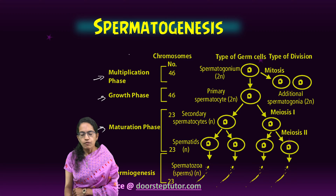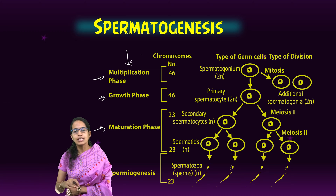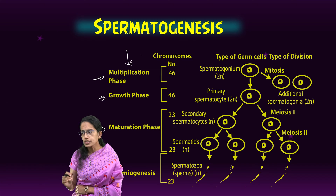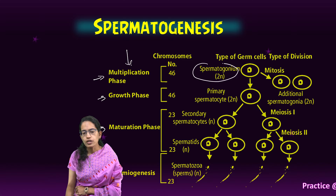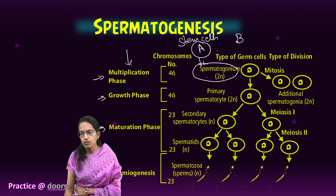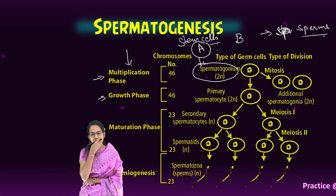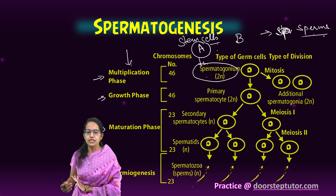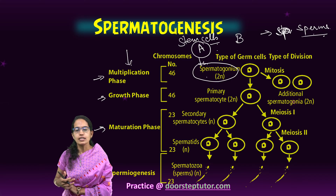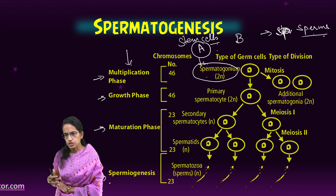Coming on to the first phase — multiplication: when the primordial germ cells occur at maturity, they divide initially by the process of mitosis, and later the process of meiosis occurs. This is where the spermatogonium, or 2N cells, are produced. Spermatogonium cells are of type A and type B. Type A serves as stem cells, however type B serves as the precursor for the sperms.